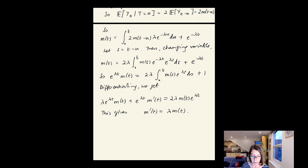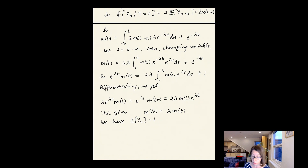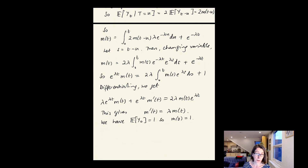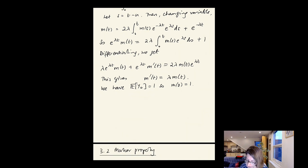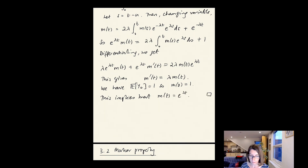We also have the initial condition m(0) = E[y_0] = 1, since we start with a single individual. Together with that initial condition, the differential equation m'(t) = lambda*m(t) is uniquely solved by the exponential function, giving m(t) = e^{lambda t}.